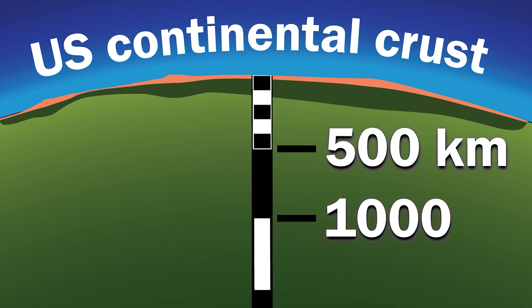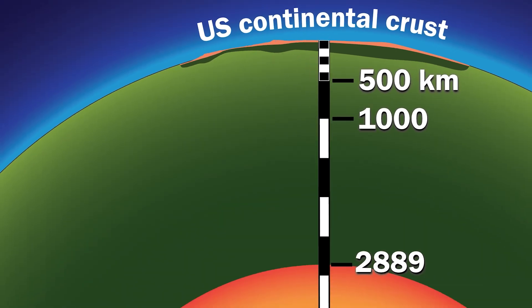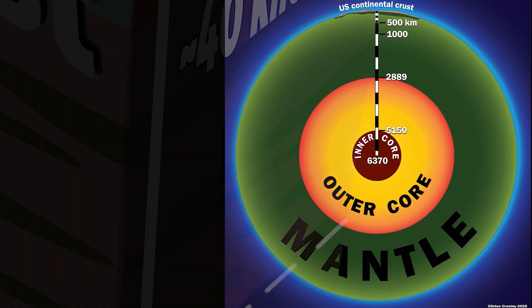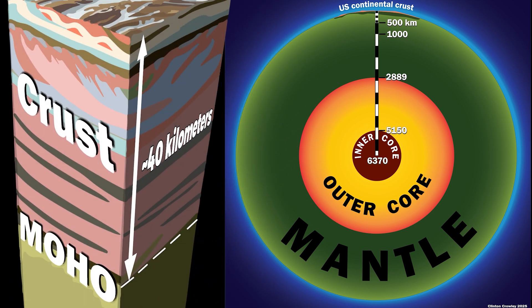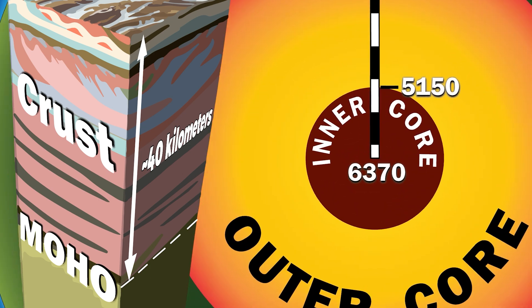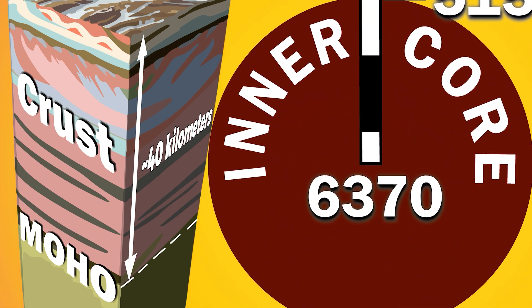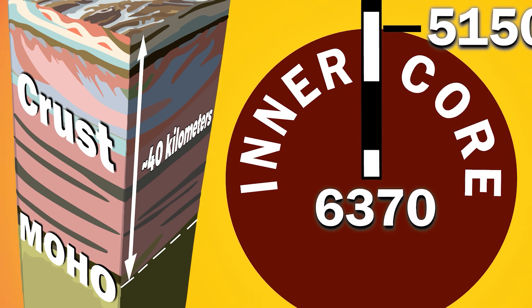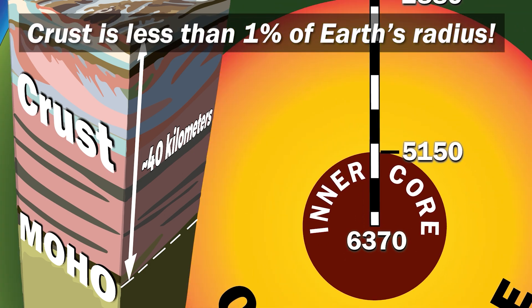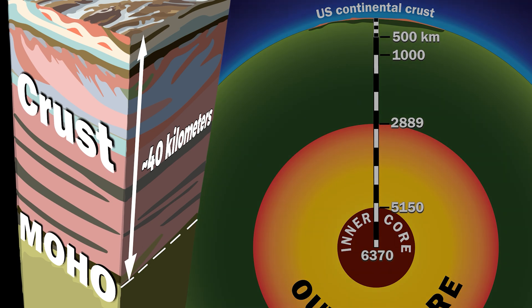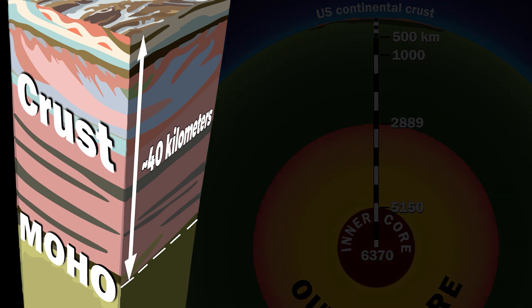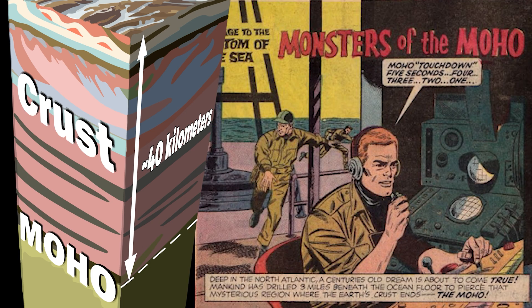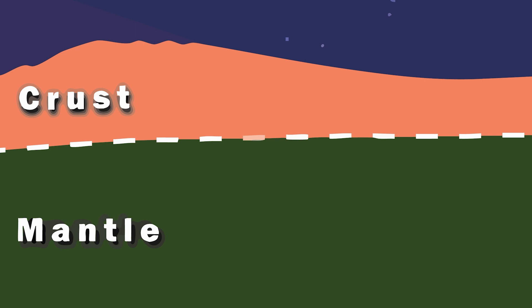How thick is continental crust? Compared to the whole planet, it's not very thick. The average thickness of the crust beneath the U.S. is about 40 kilometers or 25 miles. Earth's radius is about 6,370 kilometers, around 3,960 miles, so the crust is less than 1% of Earth's radius. 40 kilometers compared to the Earth doesn't sound like much, but it is much more than we can drill through.